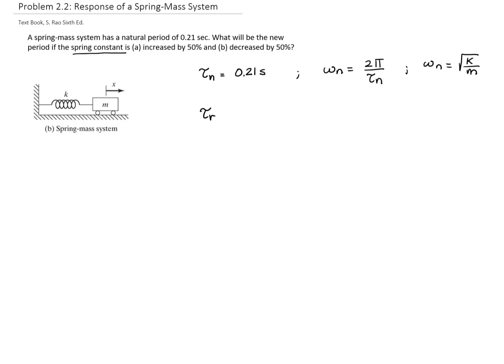Then I can write my period as 2π over ωₙ. That will be 2π times the square root of the mass divided by the square root of K. I am separating those roots because we are going to only change the spring constant.